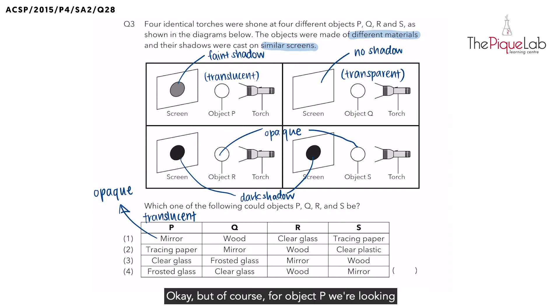For object P, we are looking for translucent material, so the mirror is not a possible option. Tracing paper, yes, it is translucent. Clear glass is transparent, so this is wrong. And then frosted glass, yes, it is translucent as well.